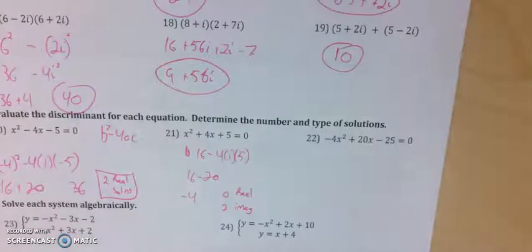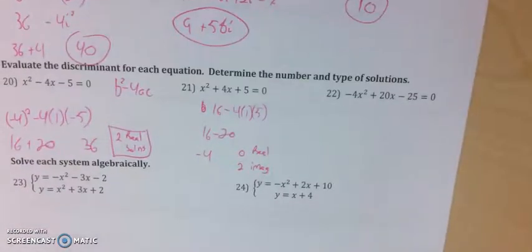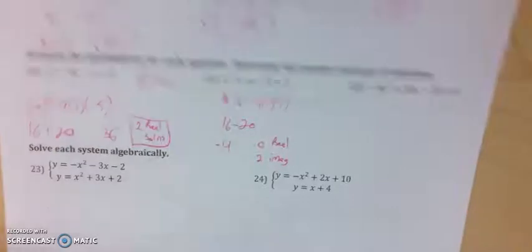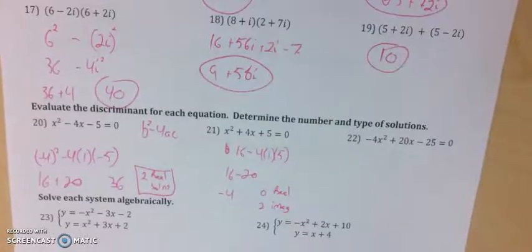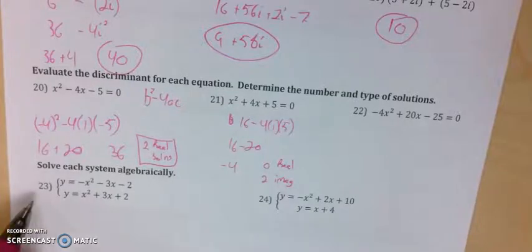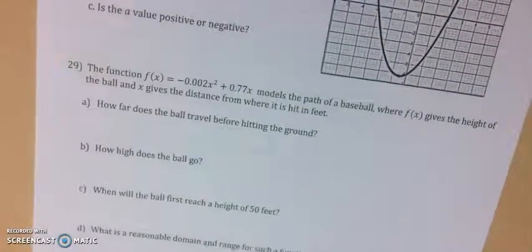Number 22 uses the exact same process — you're just trying to figure out positive versus negative discriminant. I think right here is a good pausing point and I'll carry on in a part 2 video, starting on number 23 and finishing through number 30.